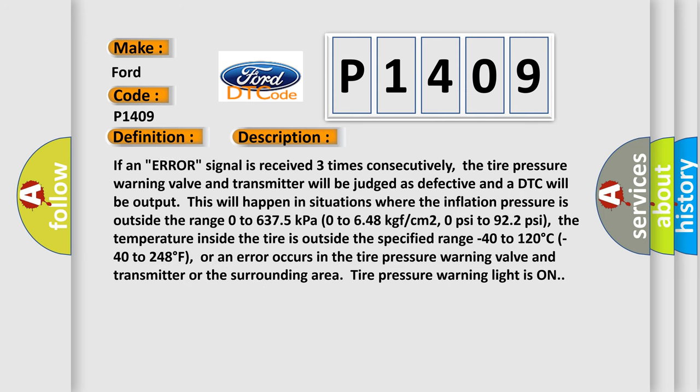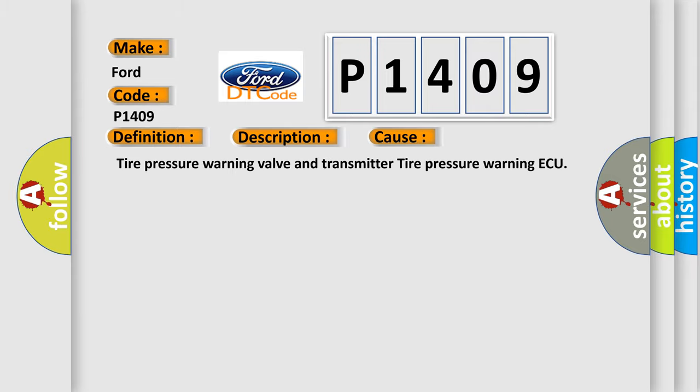If an error signal is received three times consecutively, the tire pressure warning valve and transmitter will be judged as defective and a DTC will be output. This occurs when the inflation pressure is outside the range of 0 to 6,375 kPa (0 to 648 kg/cm²; 0 PSI to 922 PSI), or the temperature inside the tire is outside the range of minus 40 to 120 degrees Celsius (minus 40 to 248 degrees Fahrenheit), or an error occurs in the tire pressure warning valve and transmitter. The tire pressure warning light will be on. This diagnostic error most often involves the Tire Pressure Warning Valve and Transmitter.